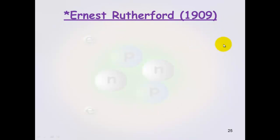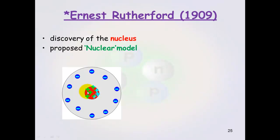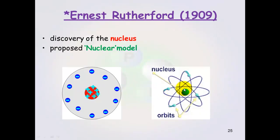Ernest Rutherford in 1909 discovered the nucleus and proposed the nuclear model of the atom. And the nuclear model of course has a positive nucleus with negative electrons around the outside.